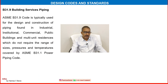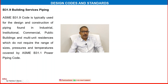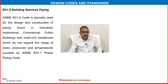It is pending on some of the ASME codes — B31.9, Building Services and Piping. The major areas we have covered include oil and gas, petrochemical, fertilizer, power plant, etc. But some other important areas also need to be covered. ASME code B31.9 is typically used for the design and construction of piping found in industrial, institutional, commercial, public buildings and multi-unit residences which do not require the range of sizes, pressure and temperature covered by ASME B31.1 power piping code.